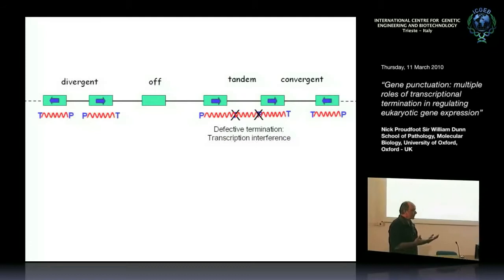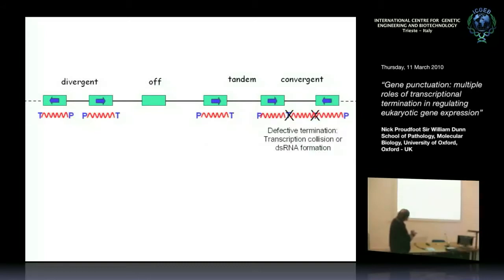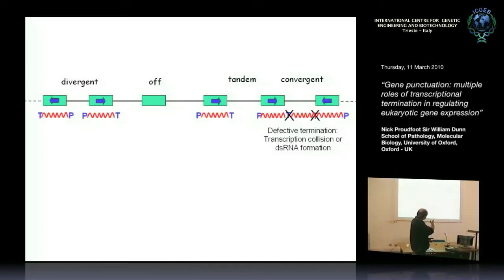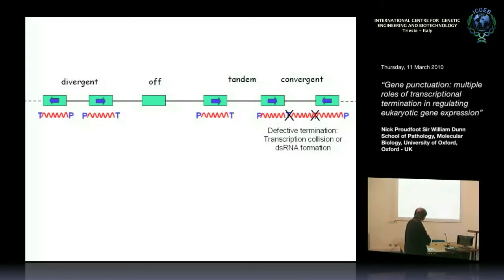A temperature-sensitive mutation gives aberrant levels of transcription. With convergent genes that fail to terminate, polymerases can collide so that neither gene is expressed properly. Furthermore, the other strands can generate RNA that is effectively overlapping or double-stranded. As soon as you make double-stranded RNA, you elicit the RNAi response, causing downregulation of genes by inducing heterochromatin — a particular case of which I'll discuss in S. pombe in the second part of the talk.